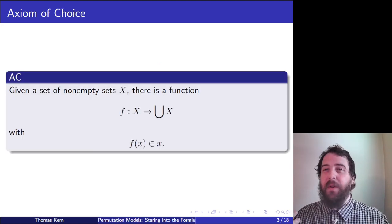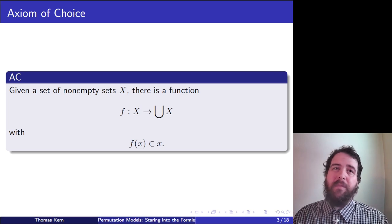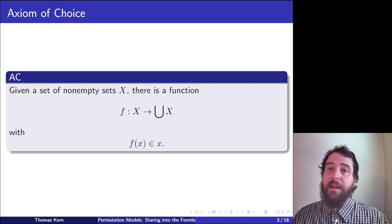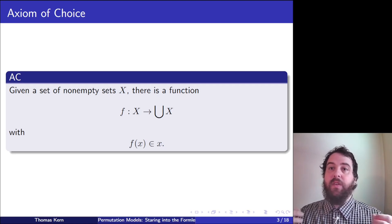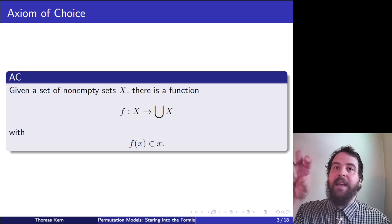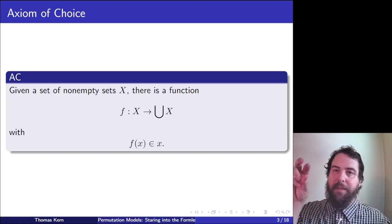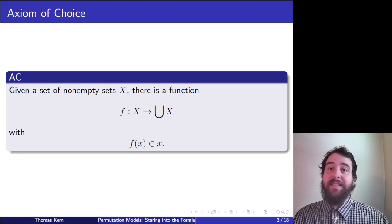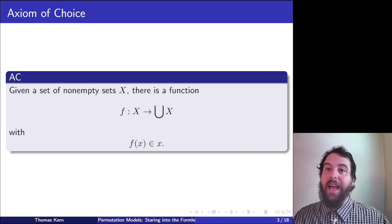Sometimes I'll include the axiom of choice among our axioms, and sometimes not. The axiom of choice says that given a set of non-empty sets, we can create a function that picks out an element of each. This actually requires an axiom in some cases, and we're going to prove in this video that the axiom of choice really is an axiom — it isn't implied by the other axioms.